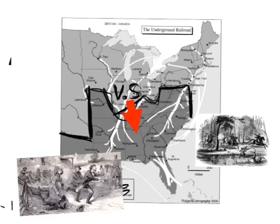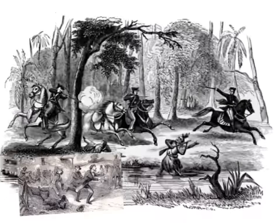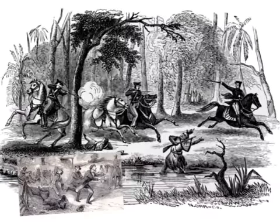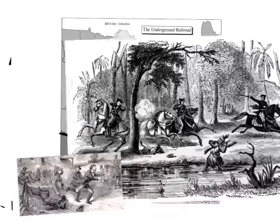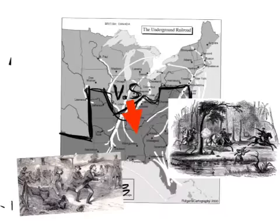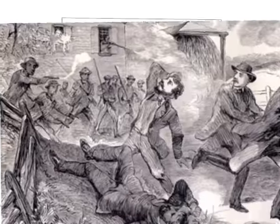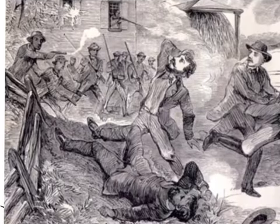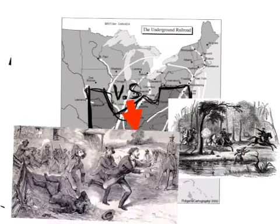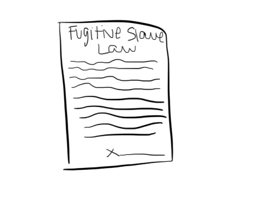The states argued about the Fugitive Slave Law, and it resulted in a divide. The Fugitive Slave Law was finally passed by Congress in 1850.